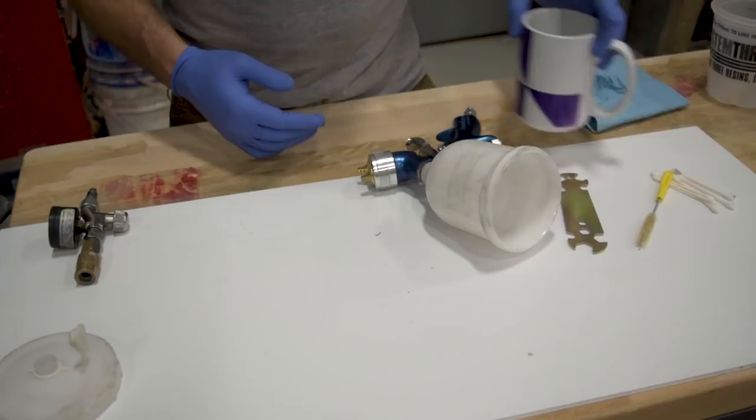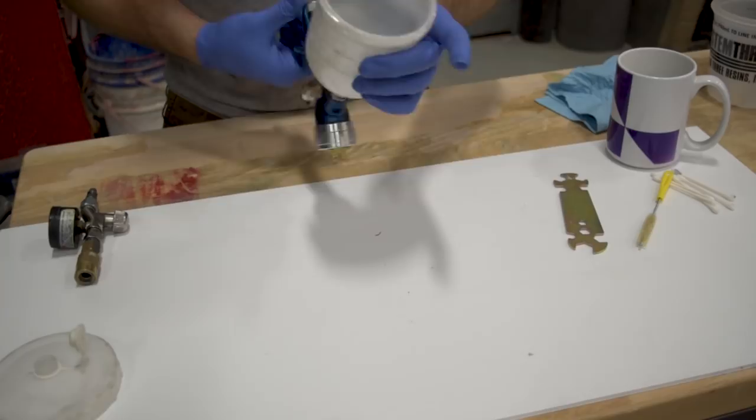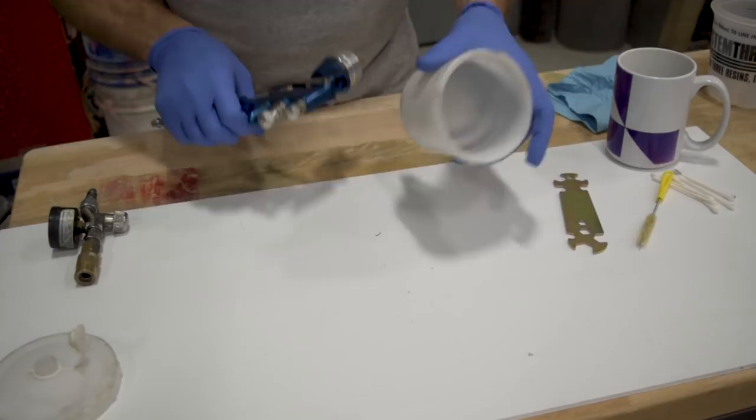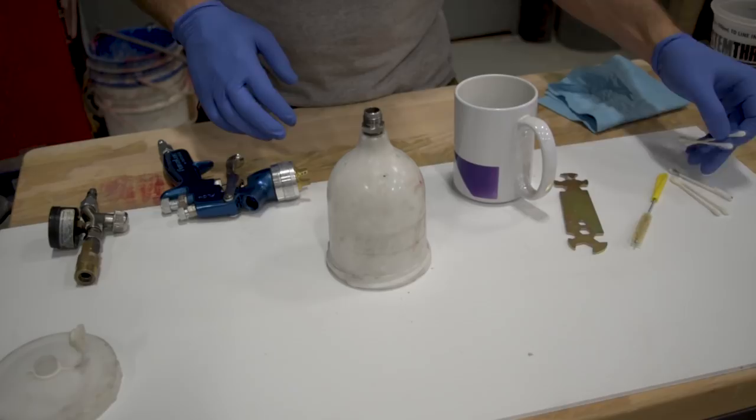So for the full cleaning we're gonna have to disassemble the gun. You're gonna want a few cleaning things, make sure you've still got your solvents around. We'll start by just kind of taking this apart.